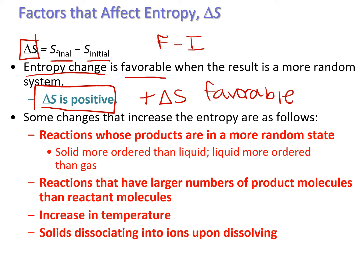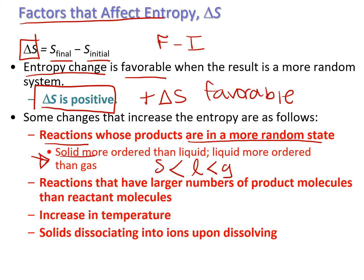There are some factors that affect entropy. First, reactions whose products are in a more random state: when your products are a liquid or a gas, these are more random compared to the reactants. We know the three states of matter — solid, liquid, and gas. Gas is more disordered than liquid, and liquid is more disordered than solid.